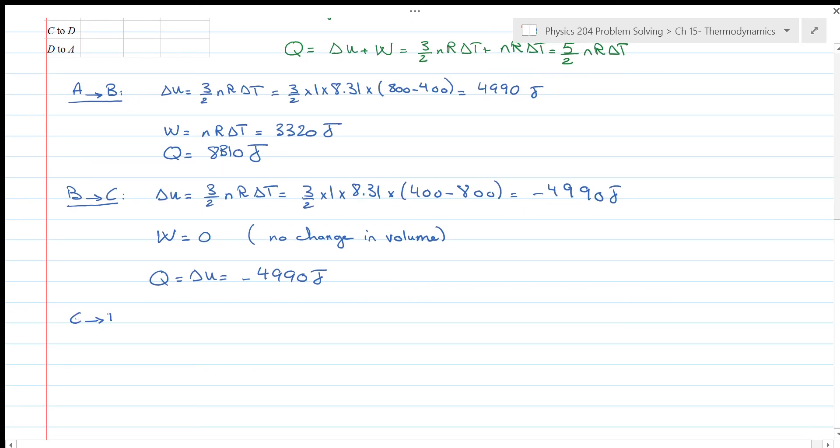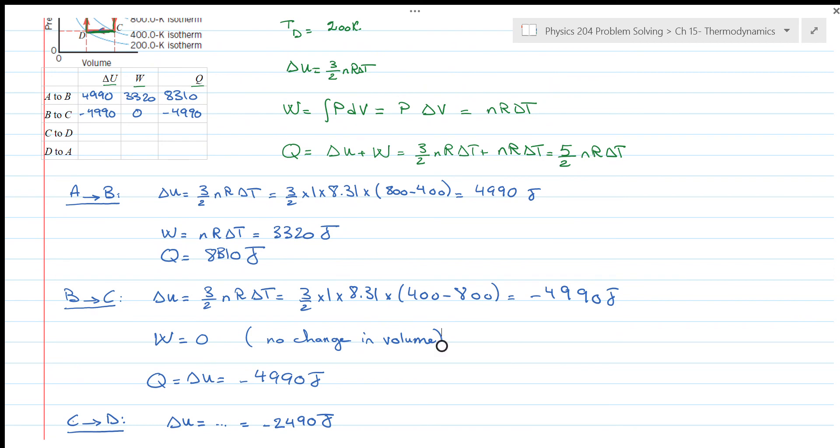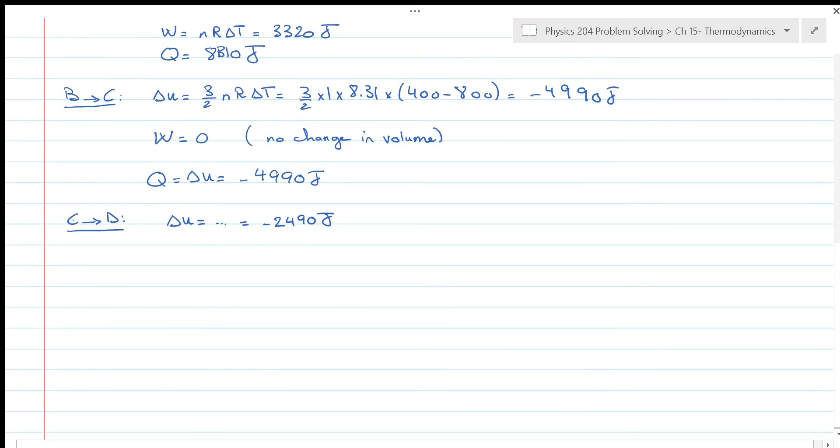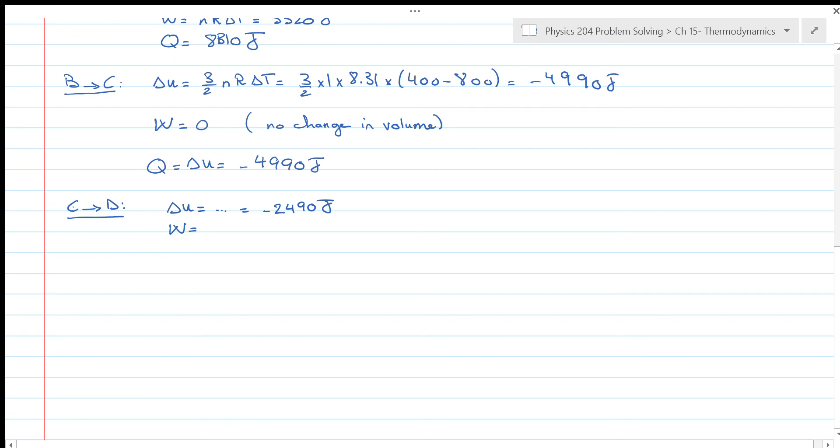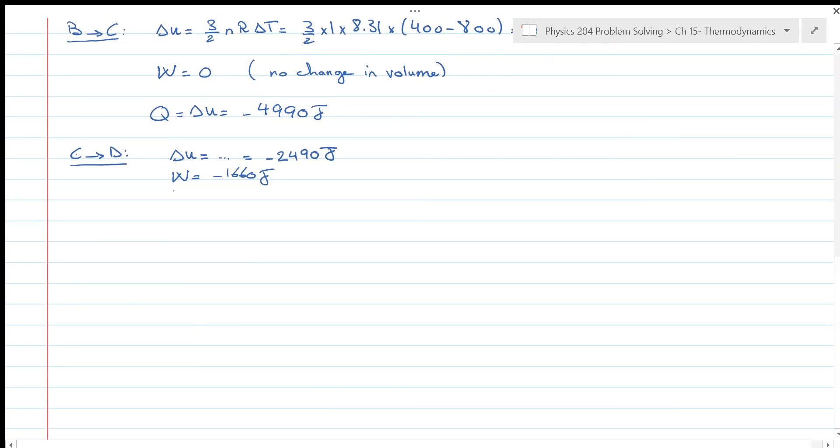And now from C to D, we can do the same thing. Find the change in internal energy. This should give you minus 2,490 Joules. From C to D we also have a decrease in temperature; that's why the change in internal energy is also negative. The work done, however, if we calculate it, we will also get a negative work done, and this makes sense because if you look at the graph from C to D, the volume is decreasing, so we have negative work involved. And Q will be just the sum, so this will be minus 4,150 Joules.